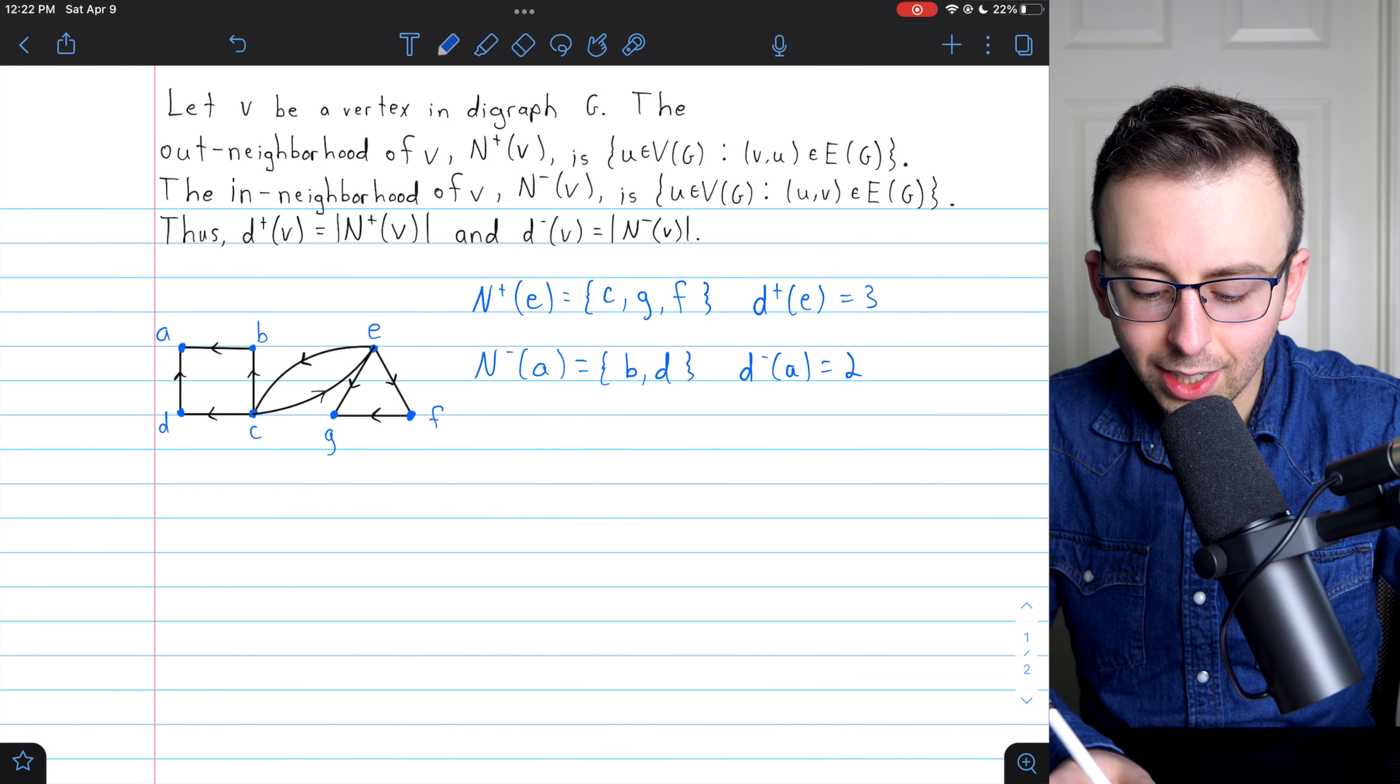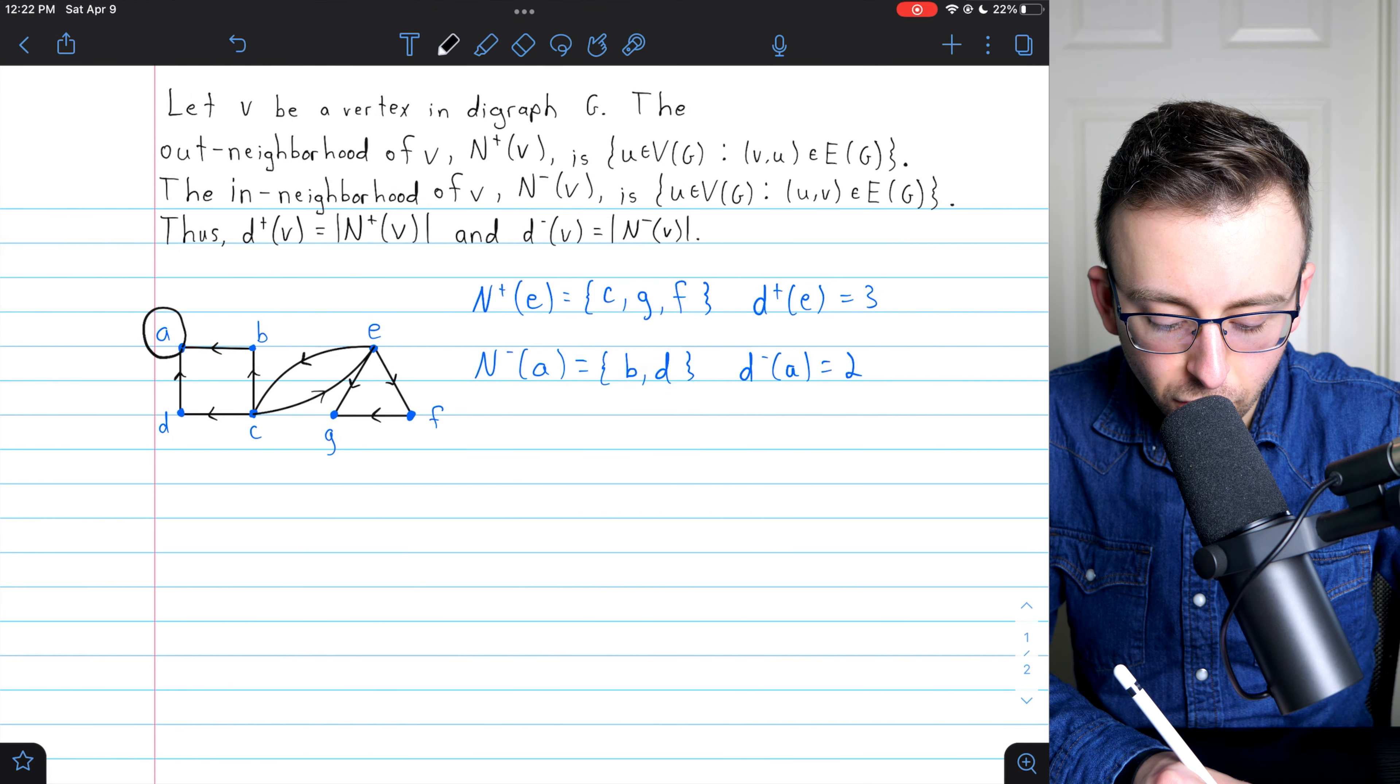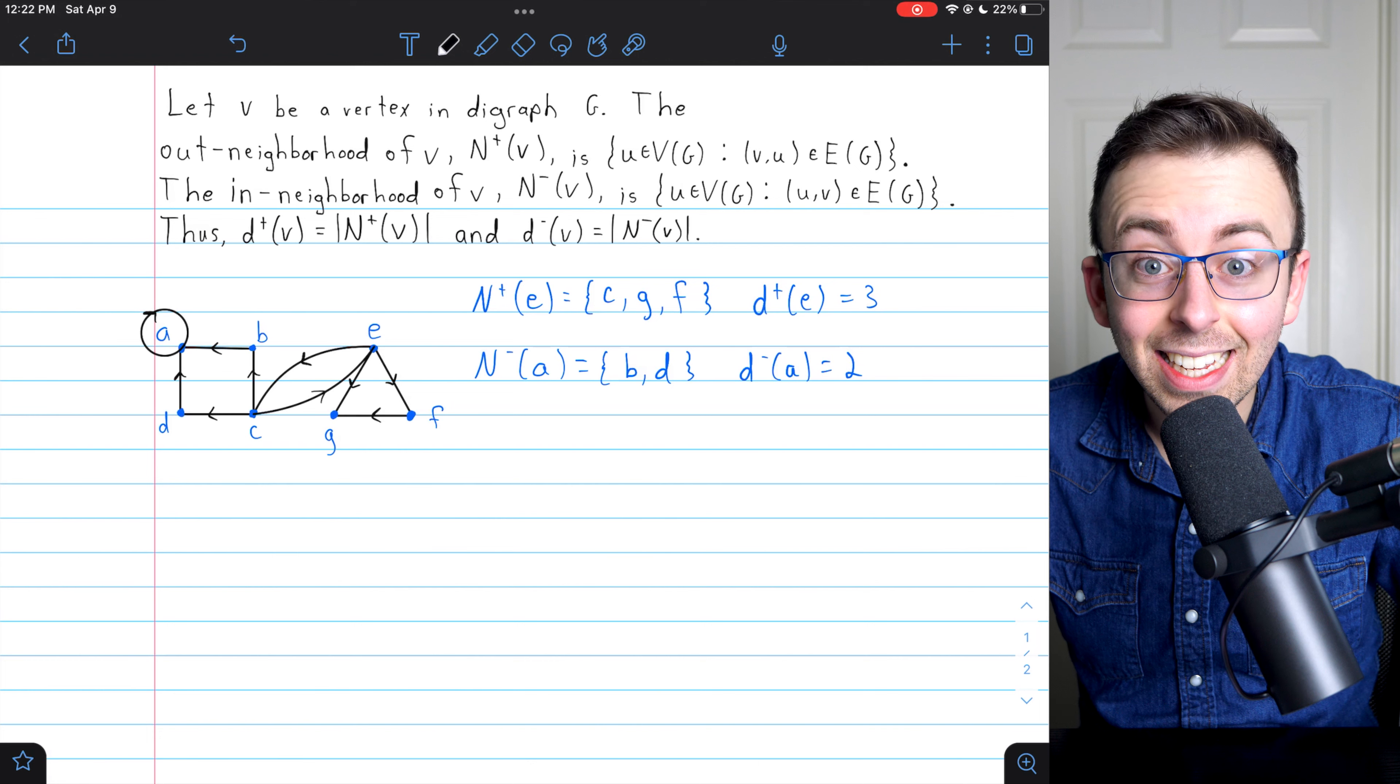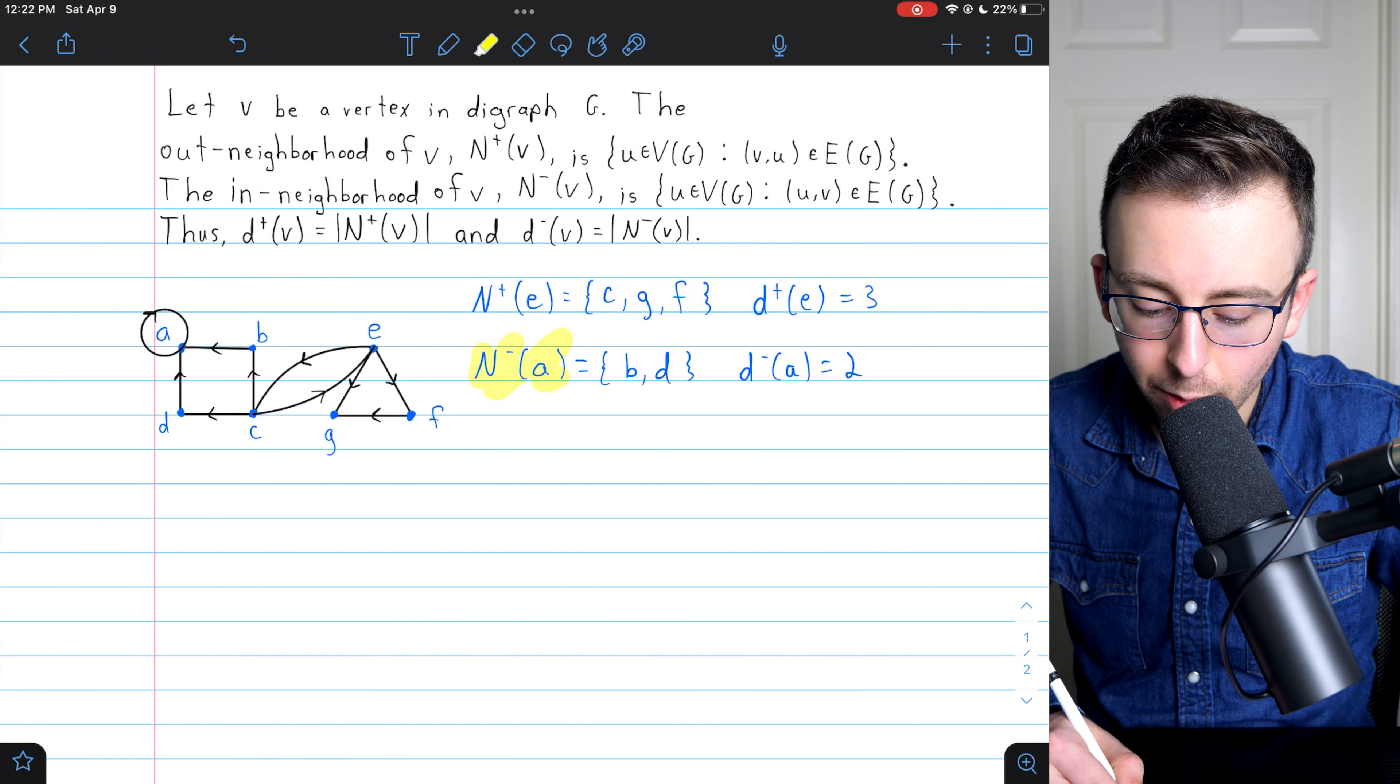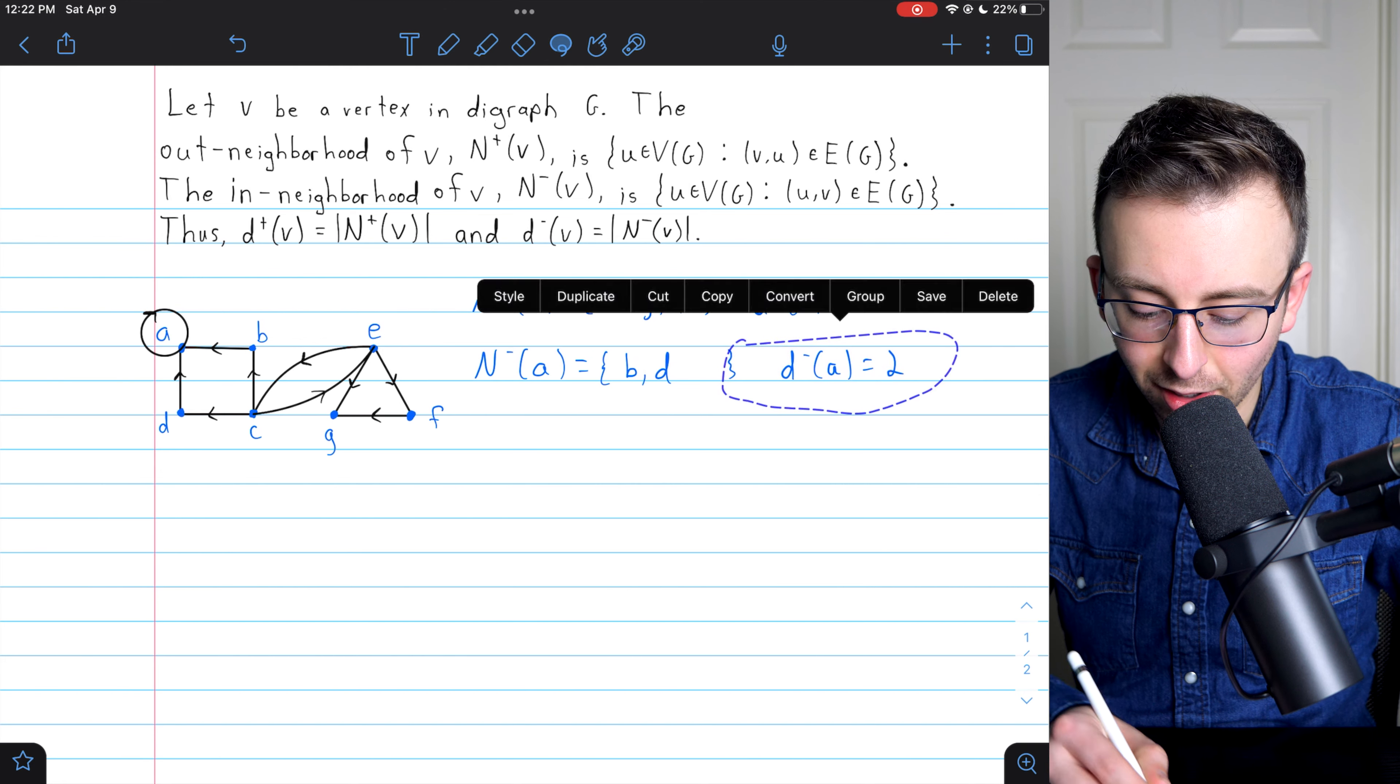Also, if we want to quickly address loops, if I were to add a loop going from A to itself, then of course, A would both be in its in-neighborhood and in its out-neighborhood. Since A is going into itself and out of itself, I could just go ahead and modify this in-neighborhood real quick to account for this loop that we just added.